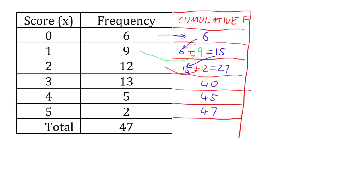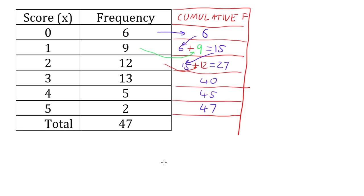Now I can use this to find my median because this tells me that the first six numbers were all zeros. Between six and fifteen they're all ones. Between fifteen and twenty-seven they're all twos and so on. So now I just want to find halfway. And now to find halfway I want to find my location of my median. And I do that by taking how many numbers I have, adding one to it and dividing by two.